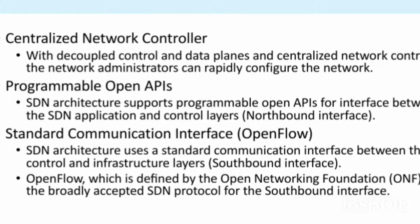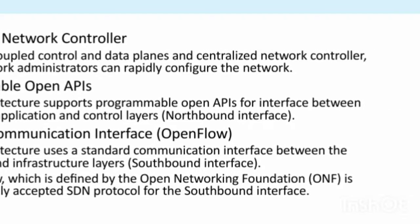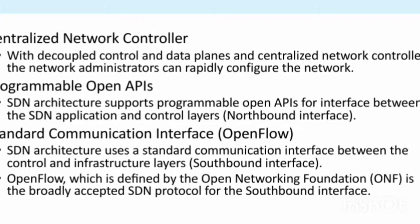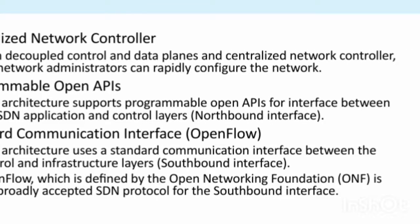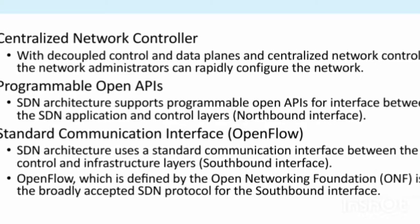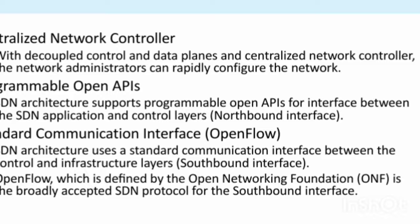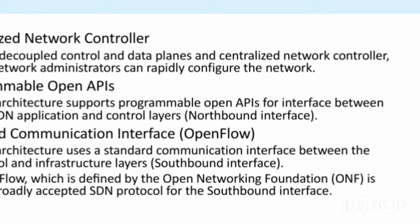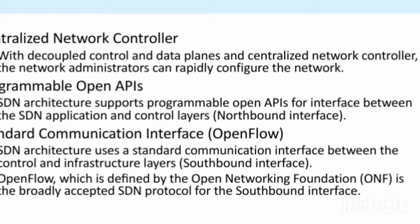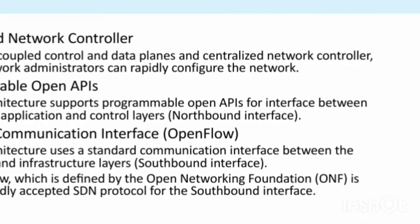In the centralized network controller with decoupled control and data planes, network administrators can rapidly configure the network. SDN architecture supports a programmable open API for the interface between SDN applications and the control layer — the northbound interface. A standard communication interface, OpenFlow, is used between the control and infrastructure layers as the southbound interface. OpenFlow, defined by the Open Networking Foundation, is the broadly accepted SDN protocol.